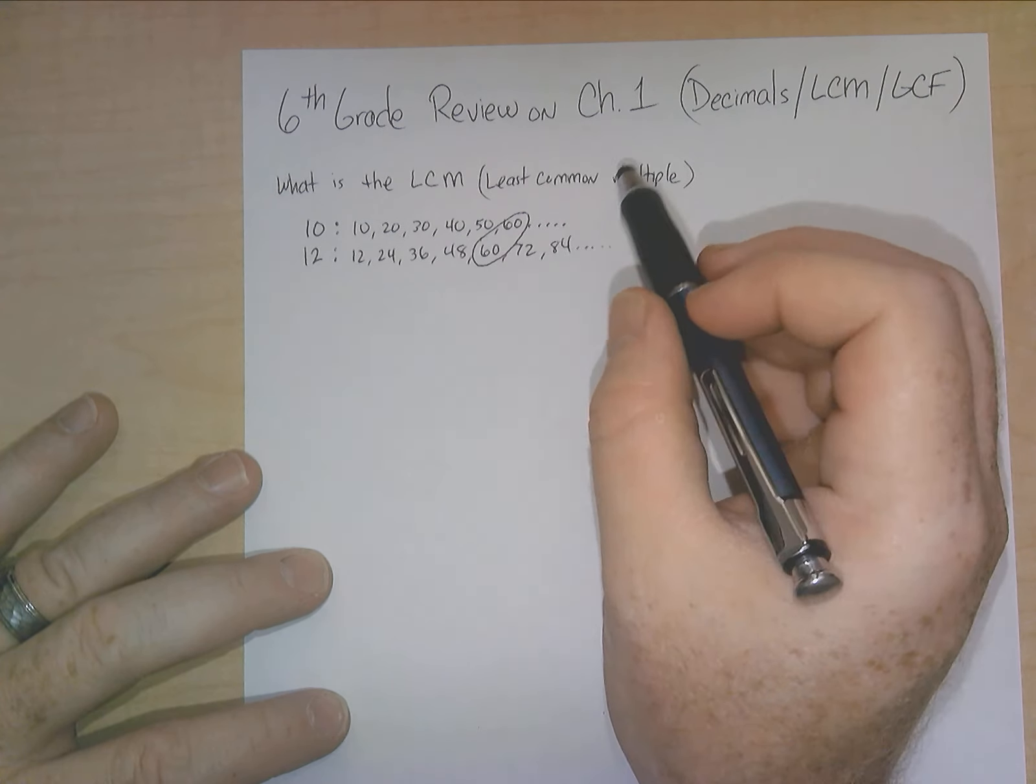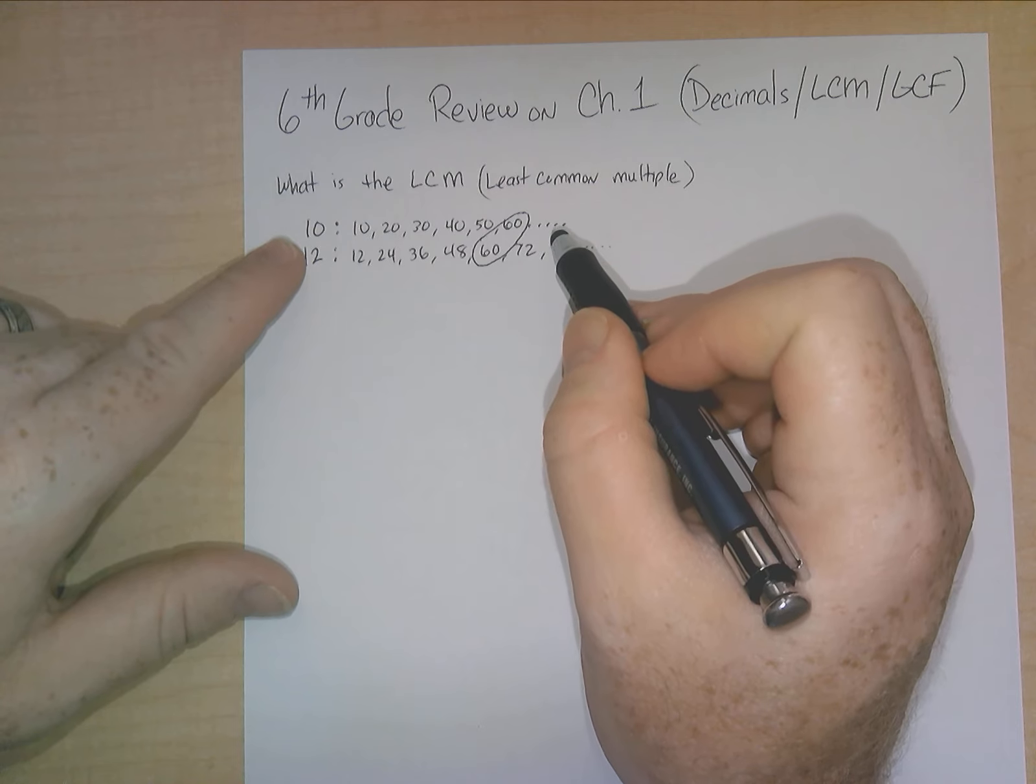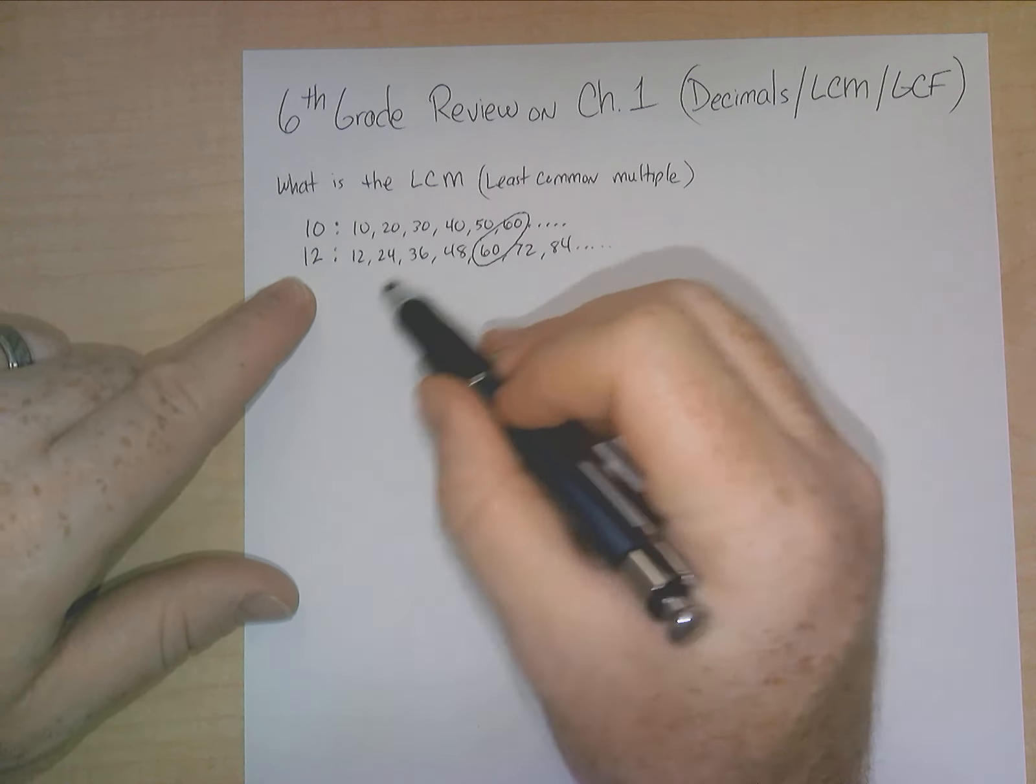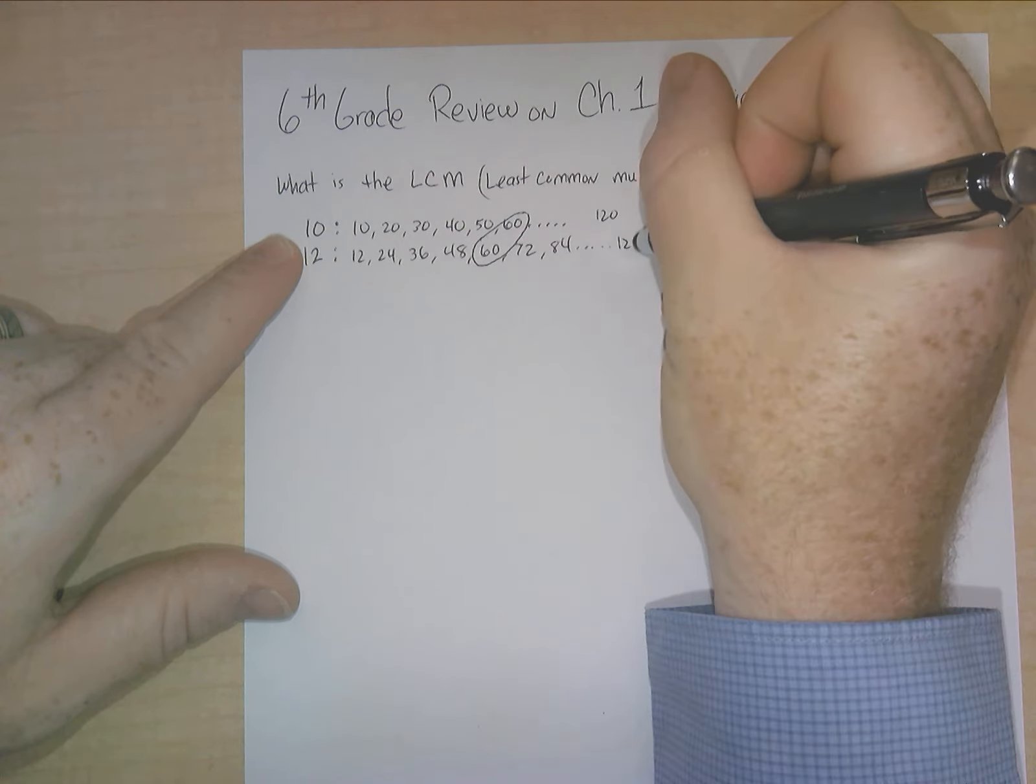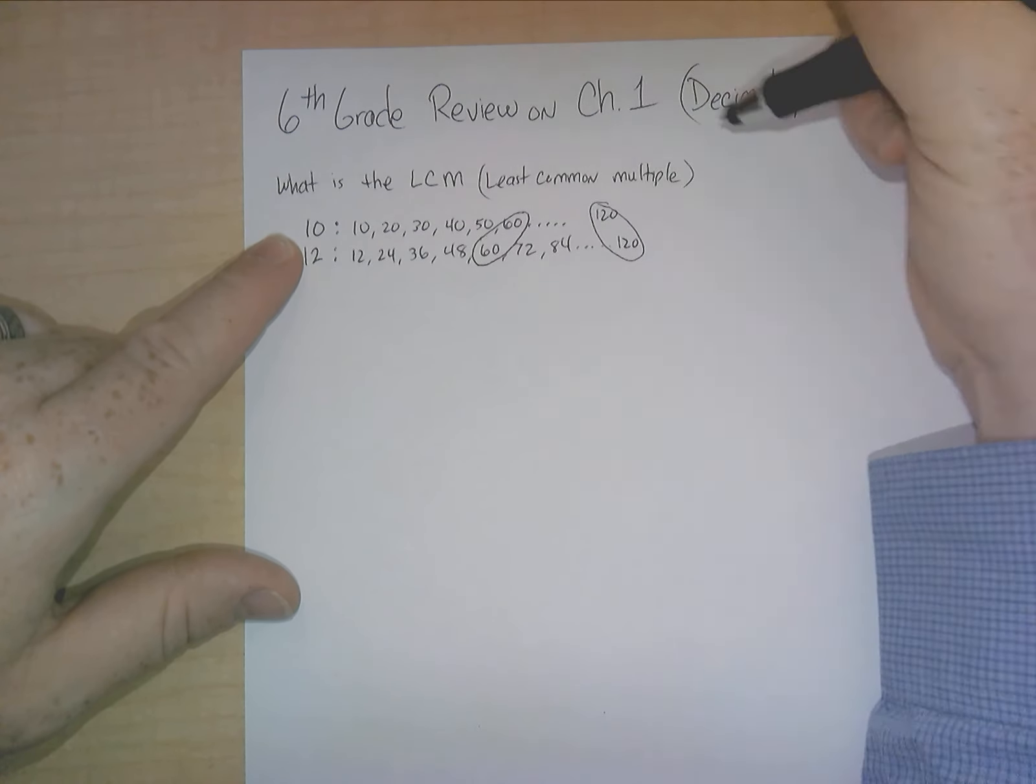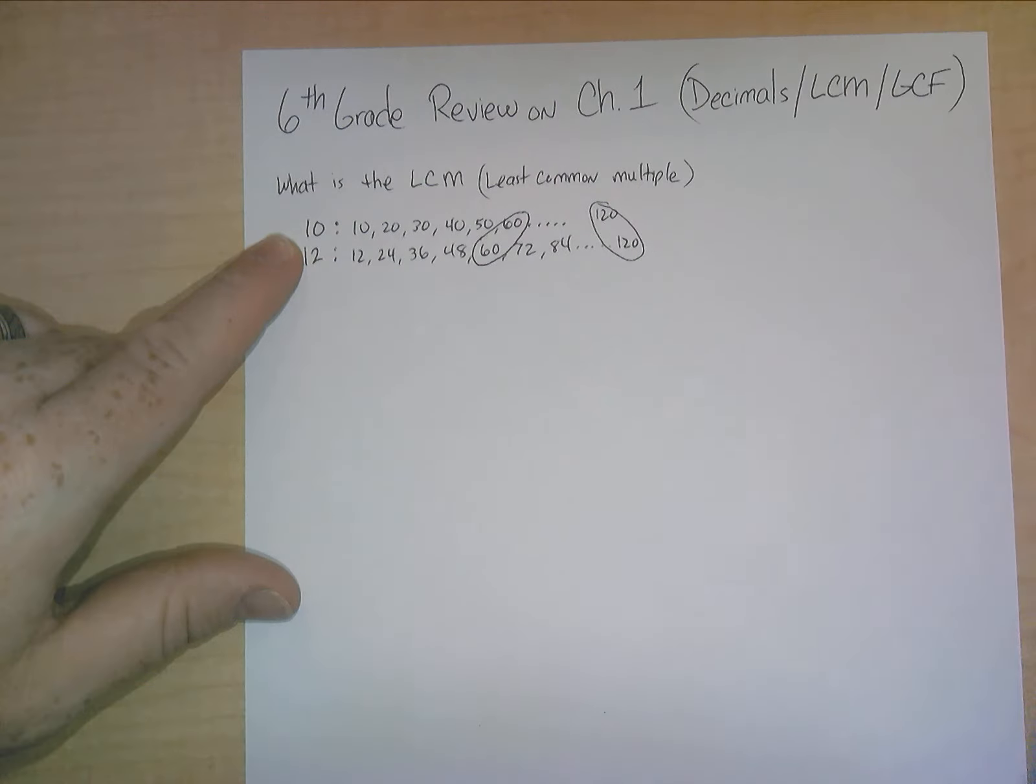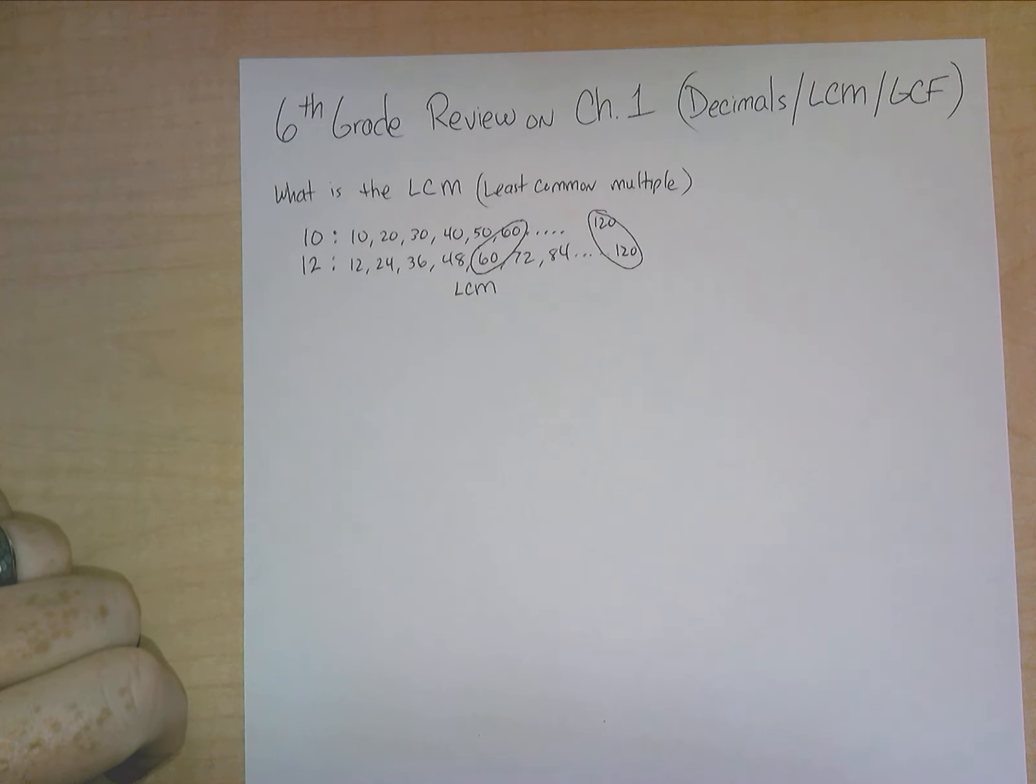For example, the next one obviously would have to be 120, because 12 can go into 120. So 120 would actually occur down here somewhere for both of these. And that could be another common multiple, but this is not the least common multiple. The least common multiple, the smallest one, is right there. So the least common multiple is 60.